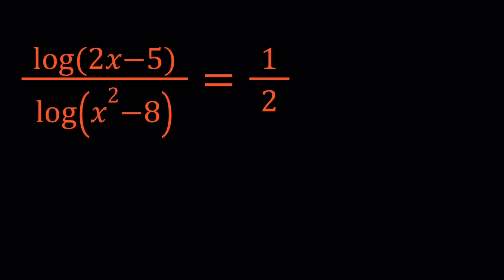Since the base was not specified, I'll take it as base 10. That's what I always do in my videos. If the base is not written, it is base 10. Let's start by cross-multiplying. We're going to multiply 2 times this and 1 times that. So it's going to give us 2 times log 2x minus 5 equals log x squared minus 8.